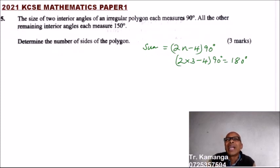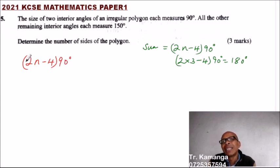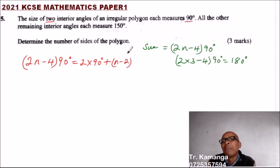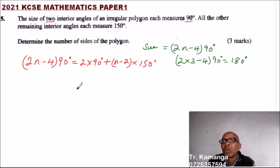Coming back to the question: 2n minus 4, multiplied by 90, equals the sum of interior angles. From the information given, 2 angles each measure 90, so we have 2 times 90 for those. Since the number of angles equals the number of sides, the remaining number of angles is n minus 2, and each of those measures 150 degrees. Solving for n will give us the number of sides.